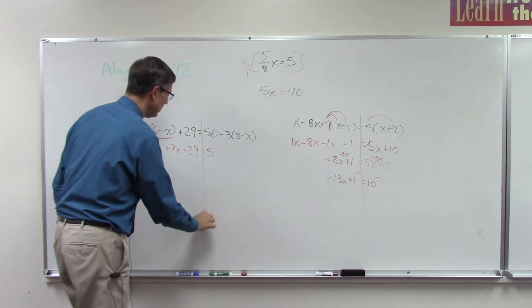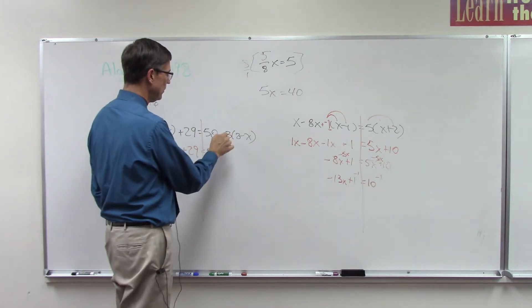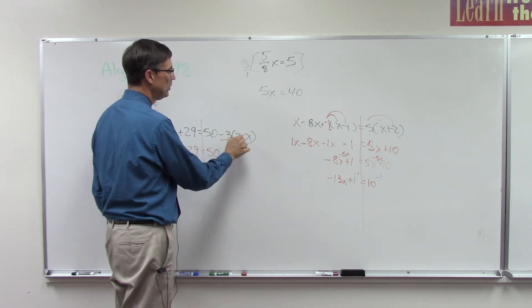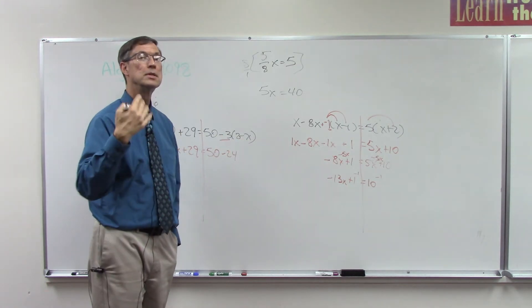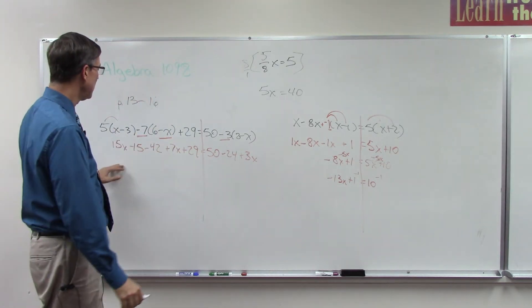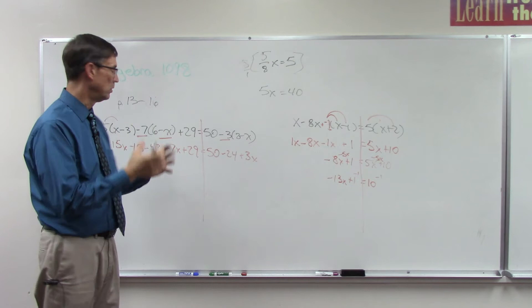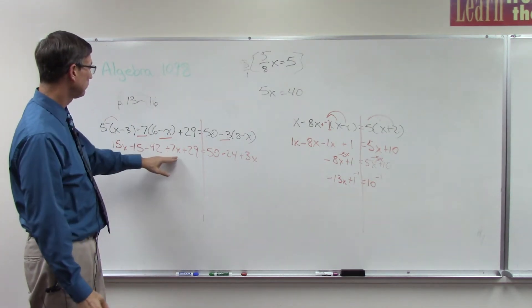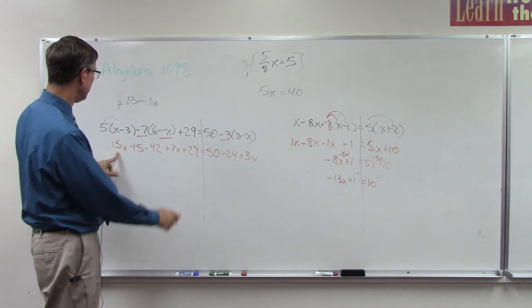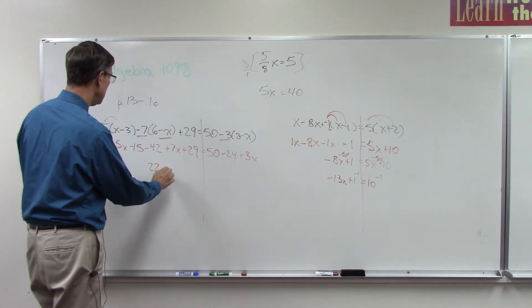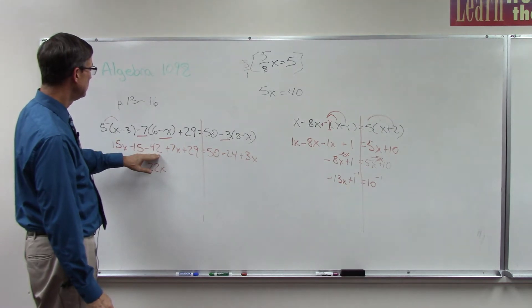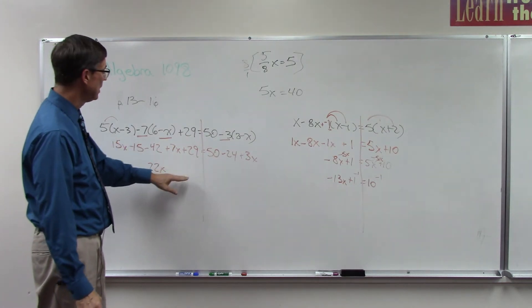Plus 29 equals 50. Now this is like negative 3 times 8, so negative 24. Negative 3 times negative x. Again, negative times negative is positive. So plus 3x. Now on each side, I want to combine whatever are like terms. So I have 15x, I have 7x, and I can combine those two and get 22x. Then I can add negative 15 plus negative 42 plus 29. And I want you to do that.